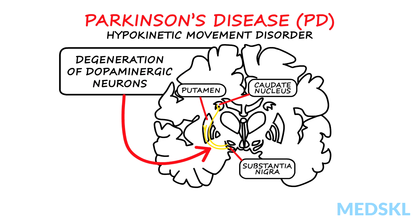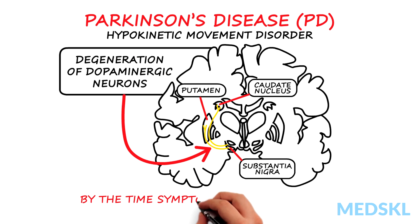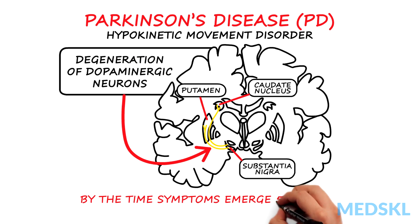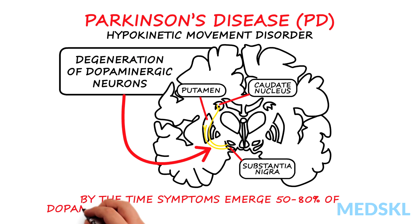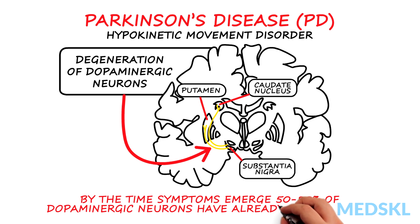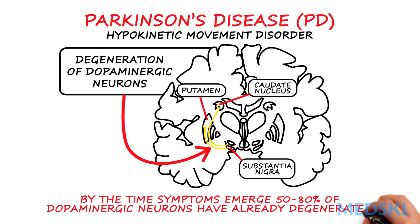The initial precipitance of neuronal death is unknown, and by the time symptoms emerge, between 50 to 80% of dopaminergic neurons have already died.